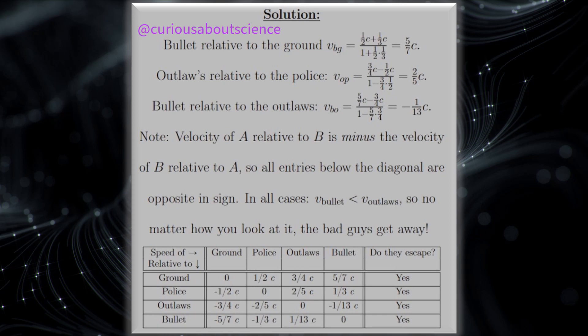That being said, we just got to be careful with the signage. But in all cases, the fact that we need to compare the bullet to the outlaw's relative, and we see that we still get less than, well, those outlaws are lucky today. That being said, we'll definitely see more of these type of things later. So we'll catch you on the next one.